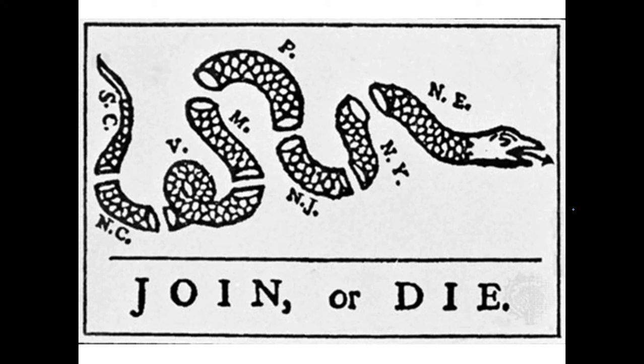Benjamin Franklin and a bunch of other Americans had this idea that they could better defend themselves during the French and Indian War — what they called the Seven Years War in Britain — by forming together the militias of the local colonies: New England, New York, New Jersey, Pennsylvania, Maryland, Virginia, and North and South Carolina.